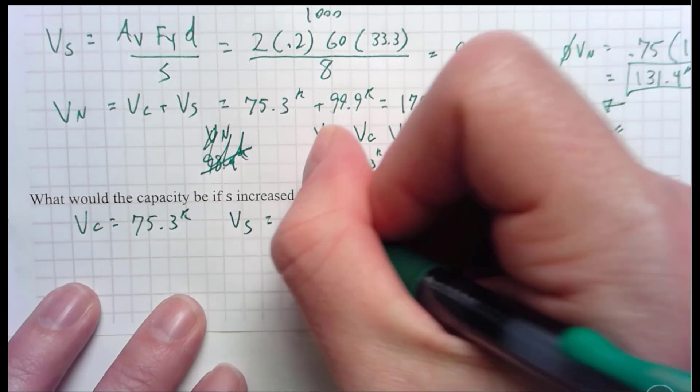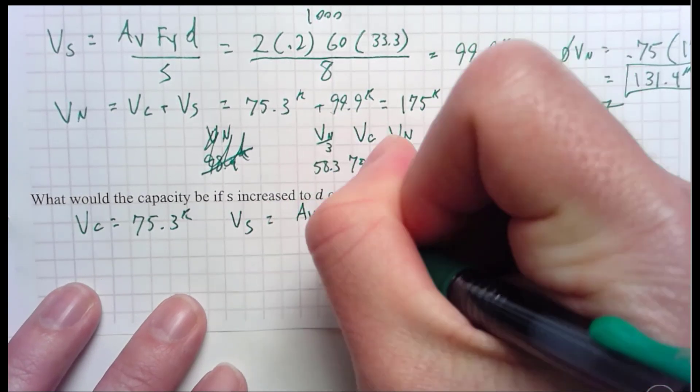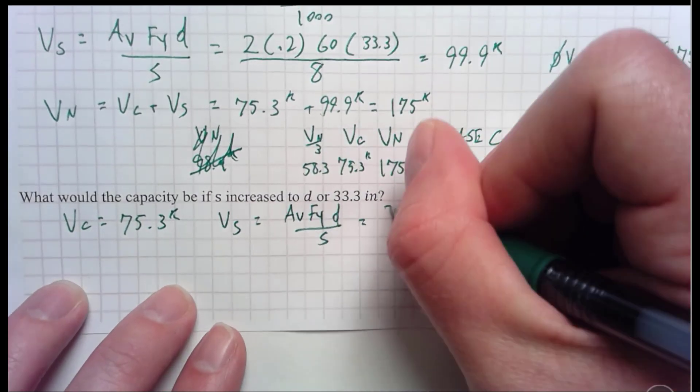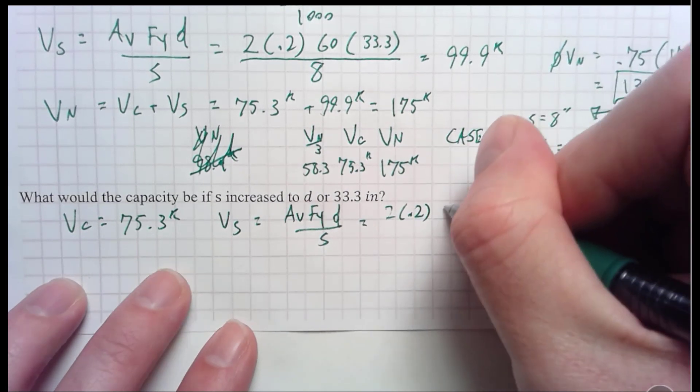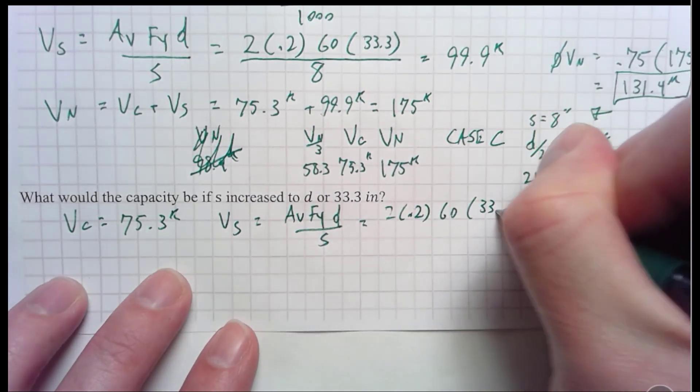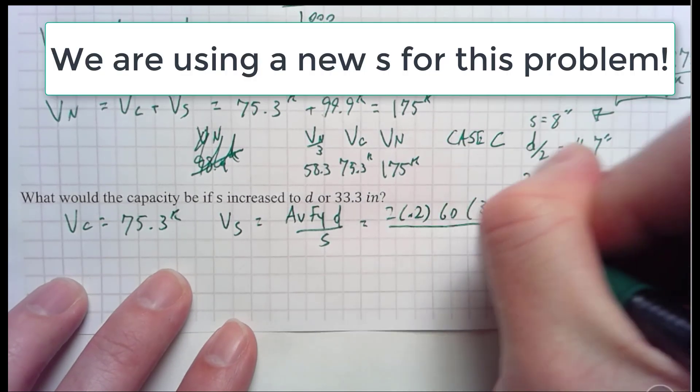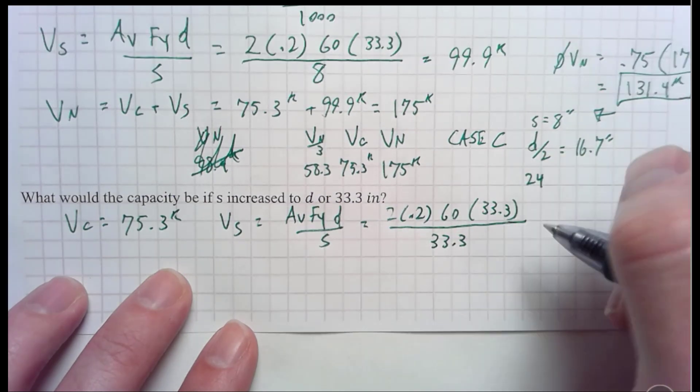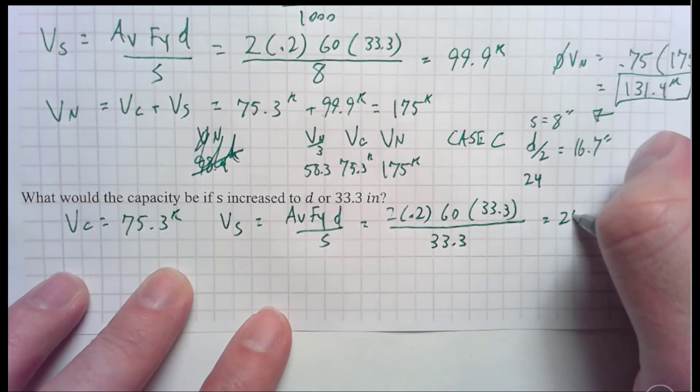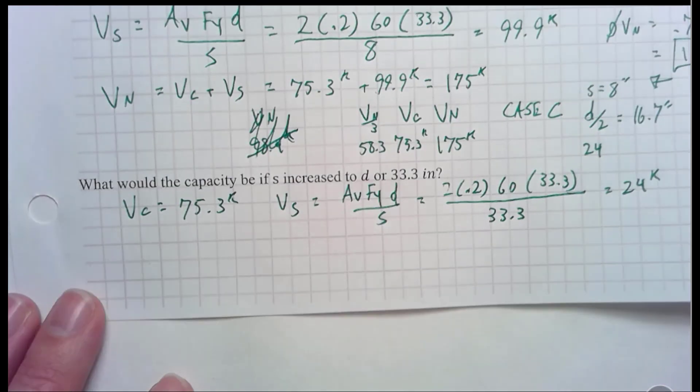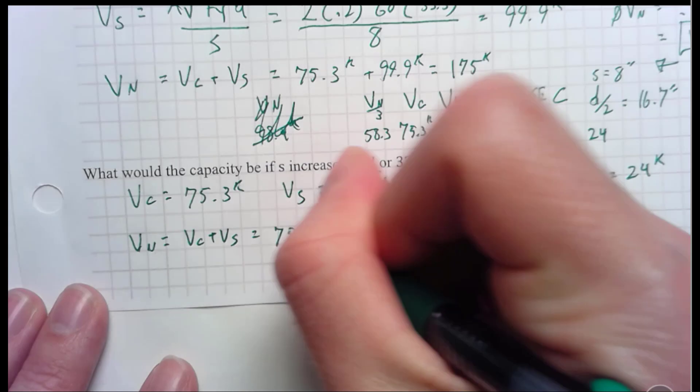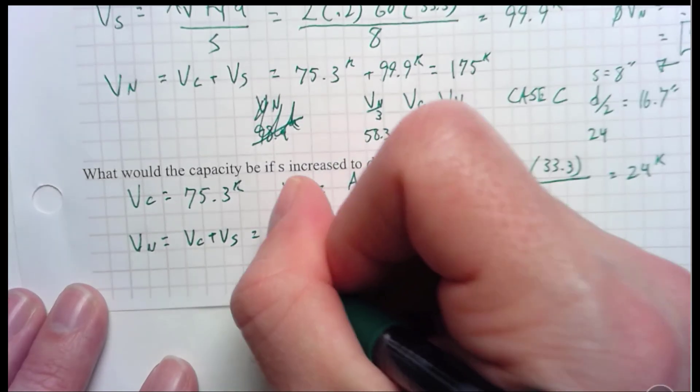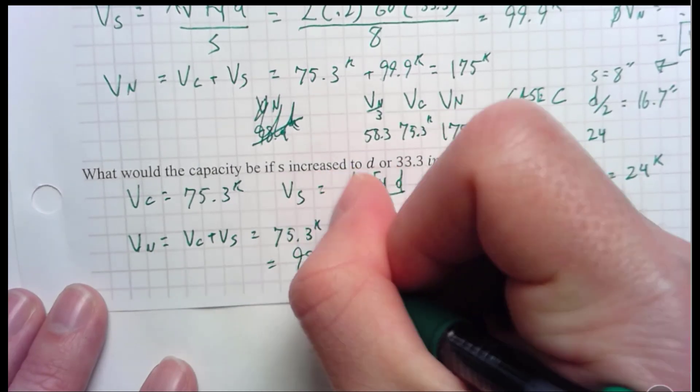My V sub S is going to be Av*Fy*d over S. Same equation, at least. But the things are going to be a little bit different. It's still going to be 2 times 0.2. My Fy is still 60. My d is now 33.3. And then now my S, at least the S I think I'm going to use, is 33.3 inches. So if I calculate all that, I get 24 kips. Awesome. So I do the same thing I did before. V sub C is 75.3 kips. V sub S is 24 kips. And I get my V sub N to be equal to 98.4 kips.